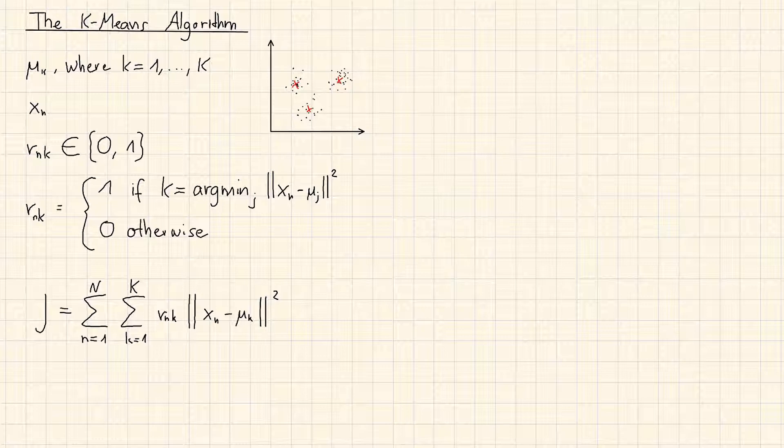In the next step, however, we do it the other way around. We optimize µk and hold rnk fixed. The objective function J is a quadratic function of µk.